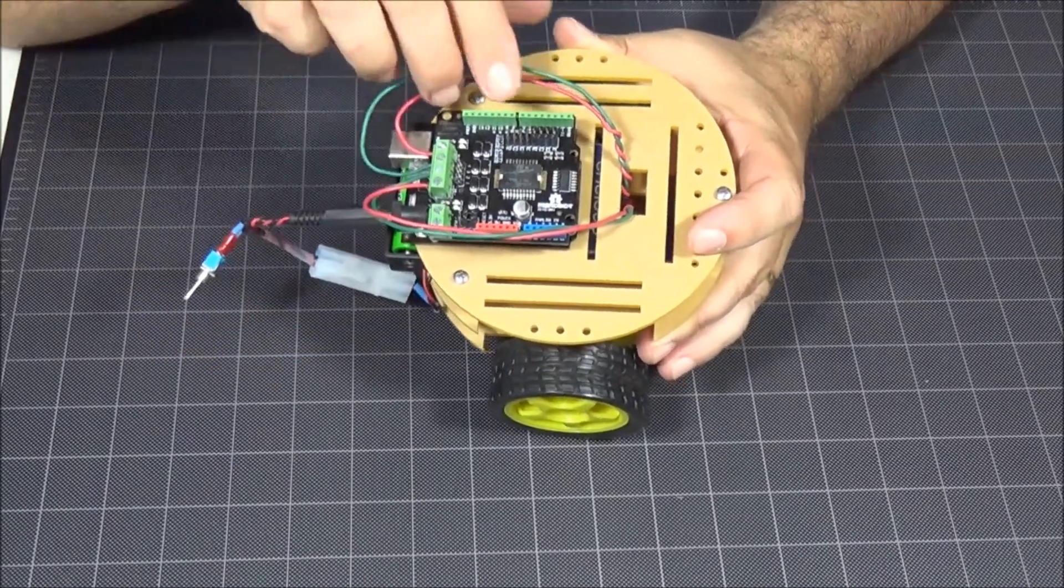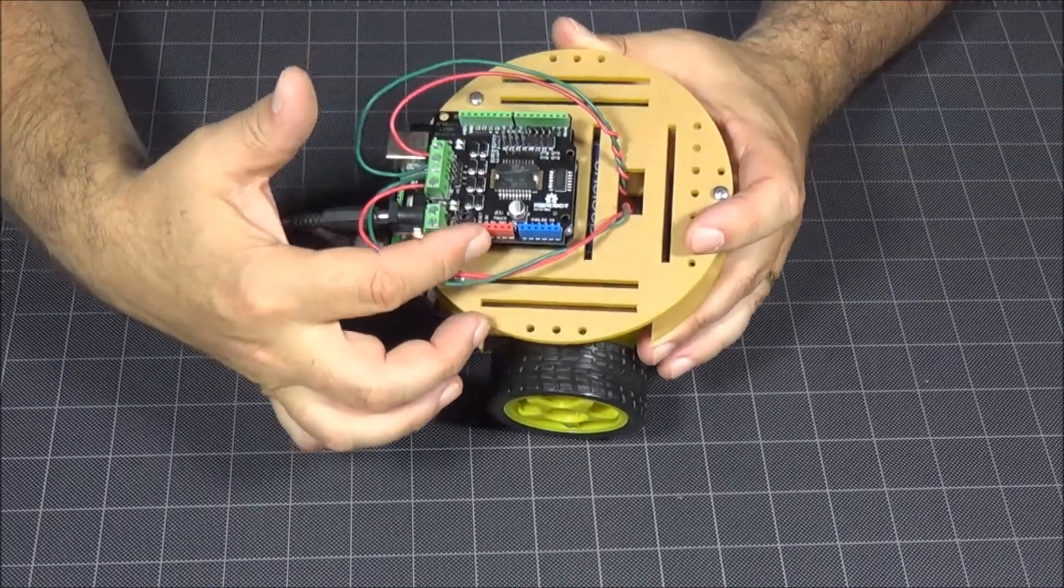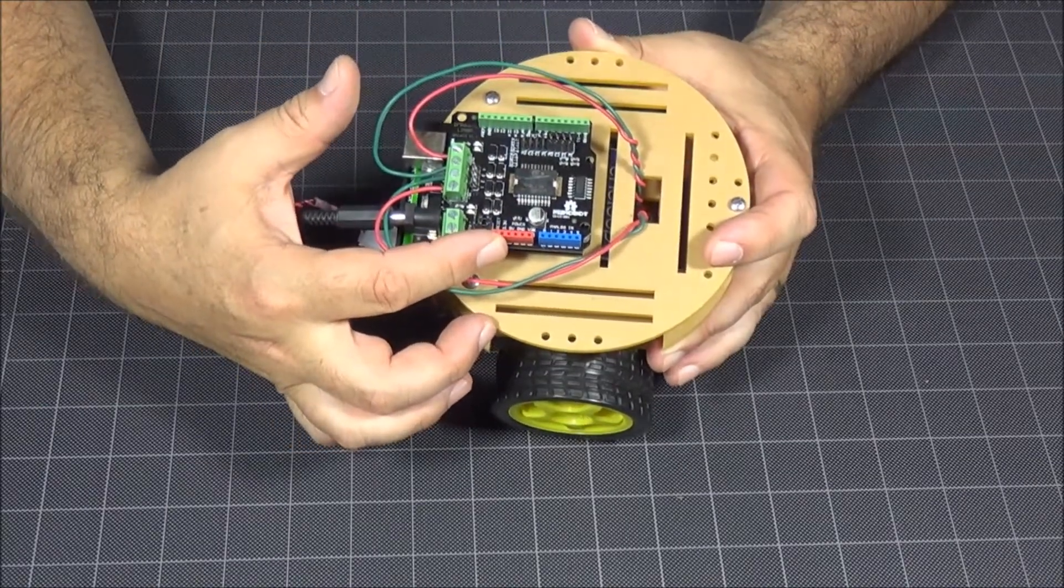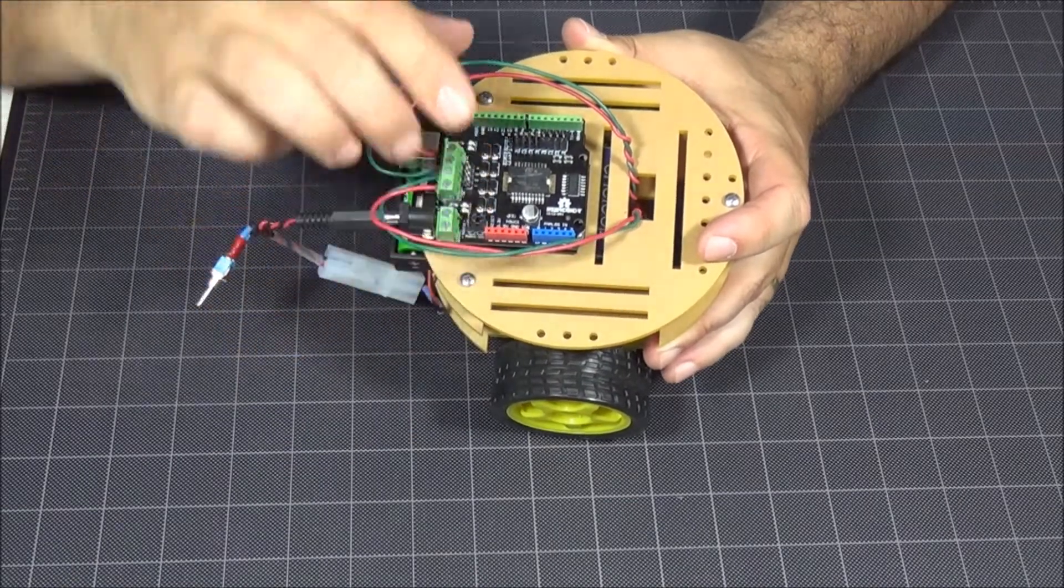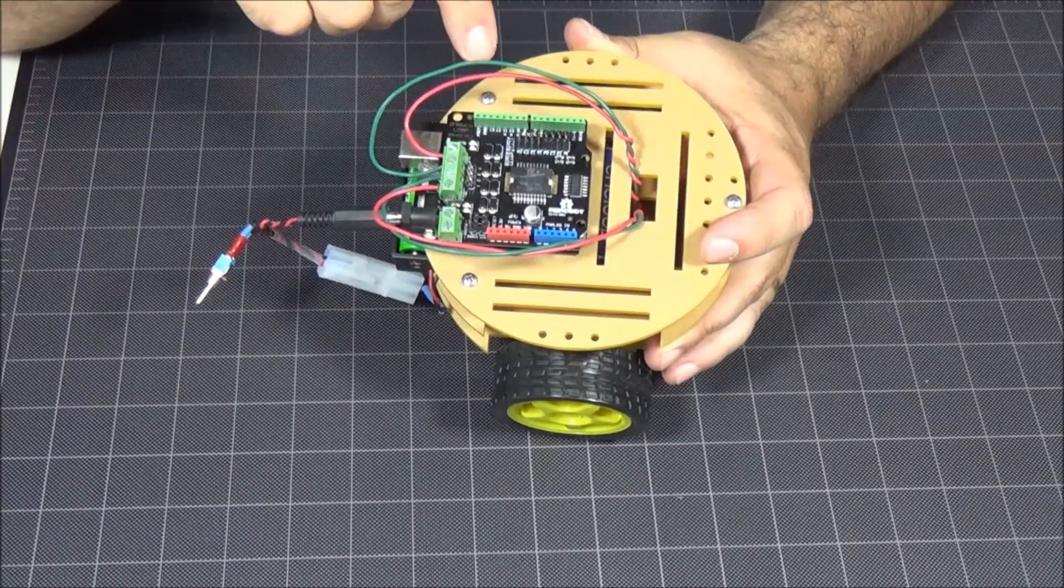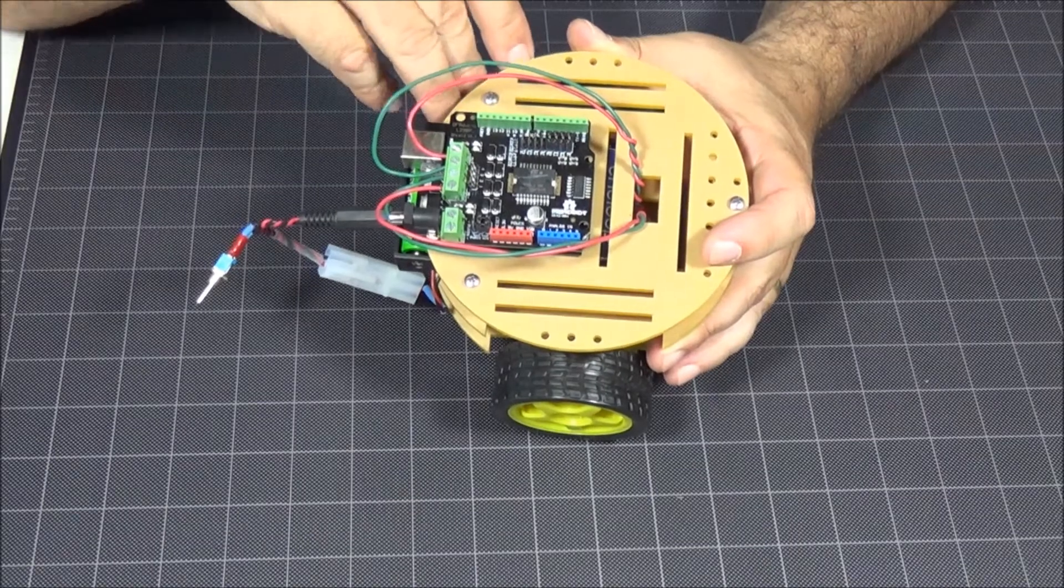As you can see, all of the Arduino pins are available as pass-through from these headers, except of course the four pins which are used to control the motors.